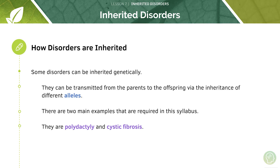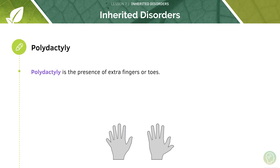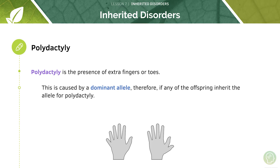Polydactyly is the presence of extra fingers or toes, and this is caused by a dominant allele. Remember from the last tutorial that if you inherit a dominant allele it always presents in the phenotype, but if you inherit a recessive allele there has to be an absence of the dominant allele in order for the recessive allele to present in the phenotype.